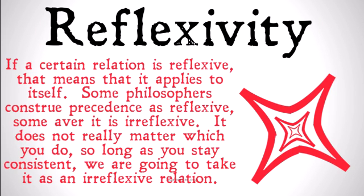If a certain relation is reflexive, that means that it applies to itself. Some philosophers construe precedence as reflexive; some aver that it's irreflexive. It doesn't really matter which you do so long as you stay consistent. We're going to take it as an irreflexive relation unless noted otherwise. Basically, all we're doing is defining the tools we're going to use to model time, so it doesn't matter too much how you define precedence as long as you stay consistent with it.